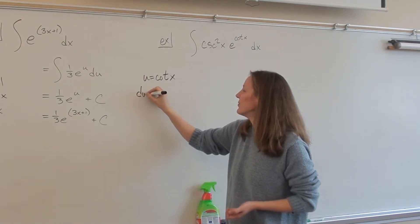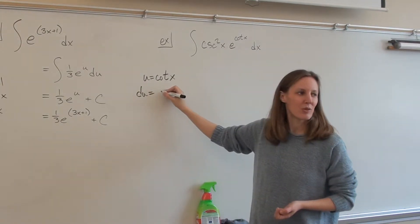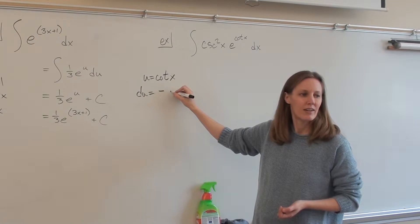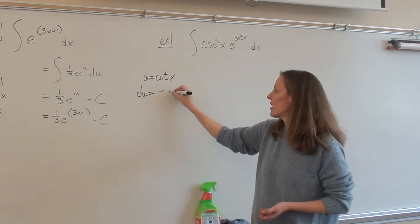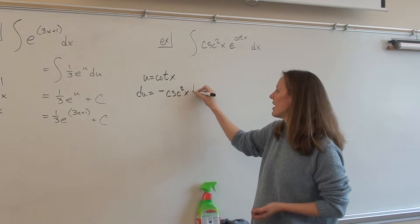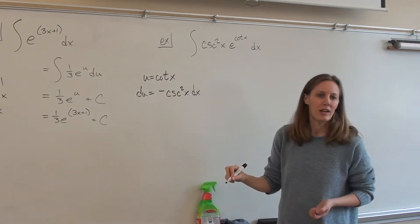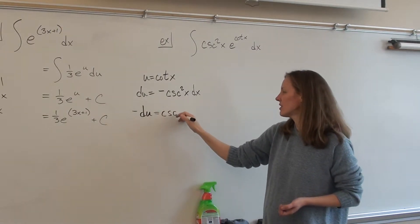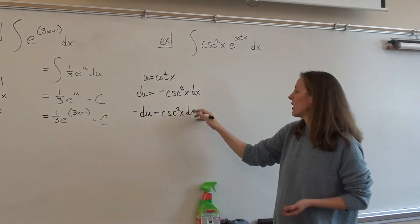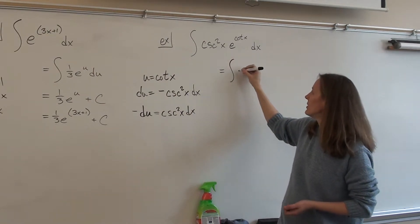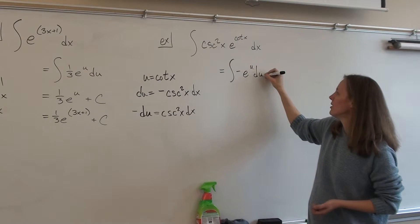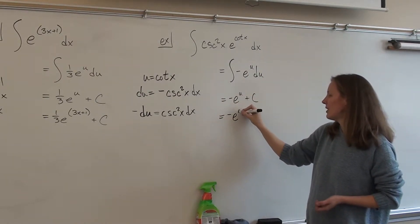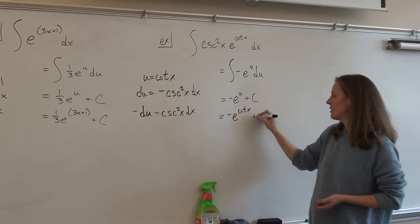What's du? That's the derivative of cotangent — negative cosecant squared x dx, right? That's almost what we have, just off by a negative. So what we end up with is the integral of negative e to the u du, giving negative e to the u plus c, which is negative e to the cotangent x plus c.